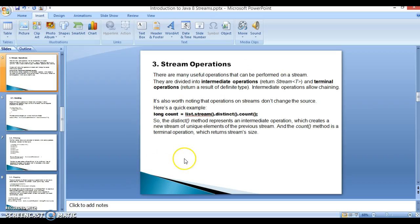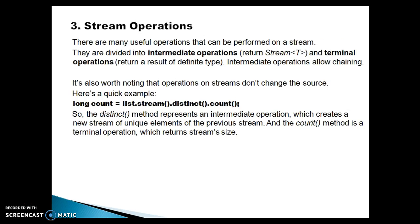Now the next thing we are going to see is stream operations. There are many useful operations that can be performed on a stream. They are divided into two categories: first is intermediate operations, which return the stream object itself, and second is terminal operations, which return a result of a definite type — that may be a boolean, integer, long, any primitive type, wrapper class object, or custom data type. Intermediate operations basically allow chaining of operations.